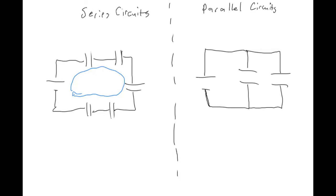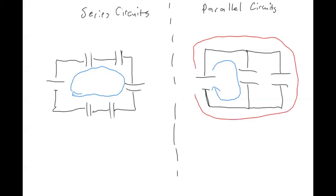The big difference between series and parallel is that in a series circuit, there's only one way around the circuit. But in a parallel circuit, you could go around one path and end up at the same place you started, or go around another path — and each path only passes through certain elements. For example, the blue path only goes through the 8 nanofarad capacitor, while the red path only goes through the 10 nanofarad capacitor.